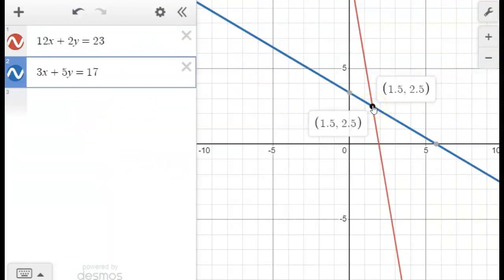But now we can see where they intersect, and it's not a nice whole value, it's 1.5 and 2.5, which that answer makes sense in the context of our problem. The price is $1.50 for the chocolate chips, a pound of chocolate chips, and $2.50 for a pound of the walnuts.